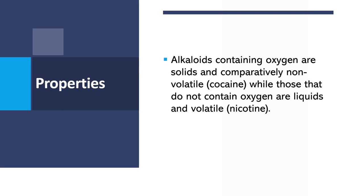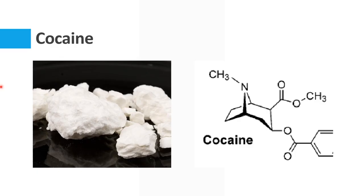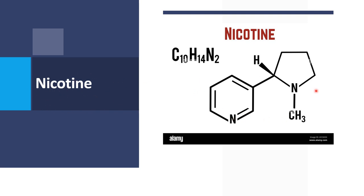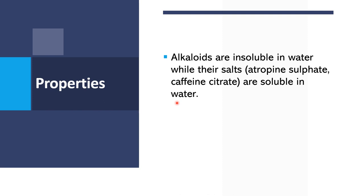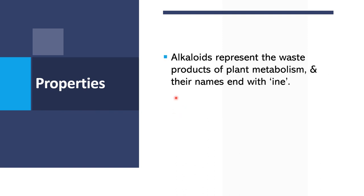For the properties of alkaloids: those containing oxygen are solid and comparatively non-volatile, such as cocaine, while those that do not contain oxygen in their chemical structure are liquids and volatile, such as nicotine. Alkaloids are insoluble in water, while their salts such as atropine sulfate and caffeine citrate are soluble in water. They have a bitter taste, represent the waste products of plant metabolism, their names end with -ine, and they should be administered in small quantities.